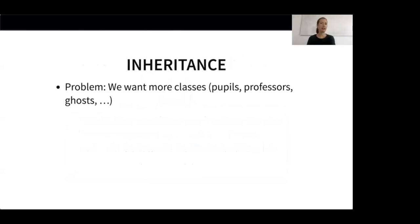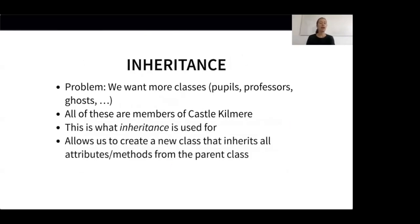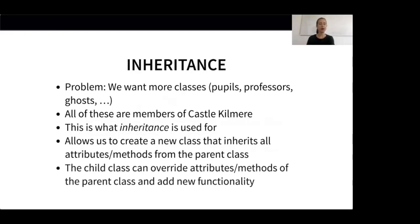The CastleKilmer member class is nice, but of course we want many other classes in our magical universe — for example, we want to create pupils, professors, ghosts and so on. But all of these are members of Castle Kilmere, so to express this relationship we can use inheritance. Inheritance allows us to create a new class that inherits all attributes and methods from the parent class. The resulting child class can overwrite methods and attributes of the parent class and add new functionality. Inheritance is great for reducing duplicated code and for showing the semantic relations between objects.